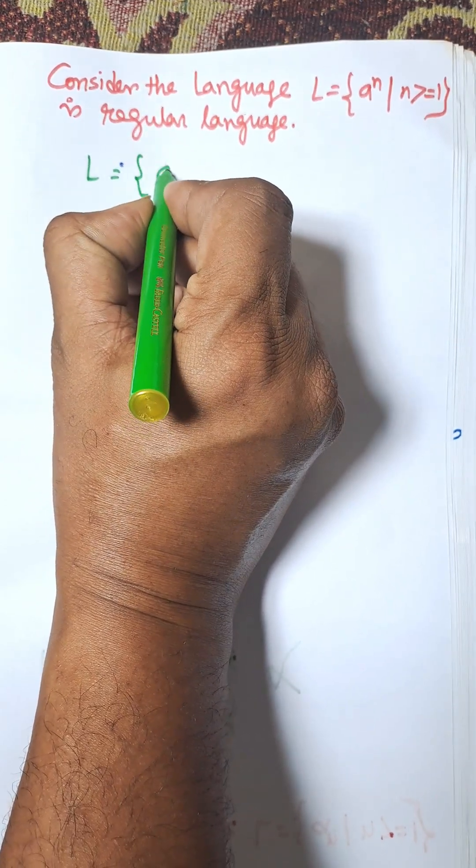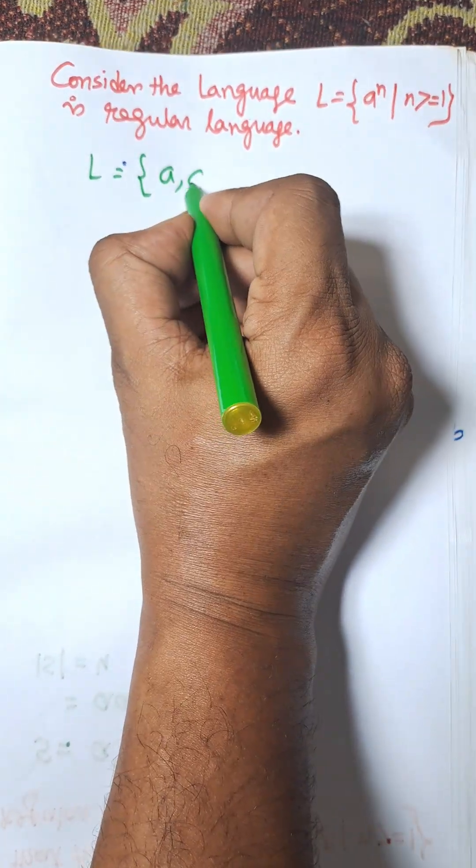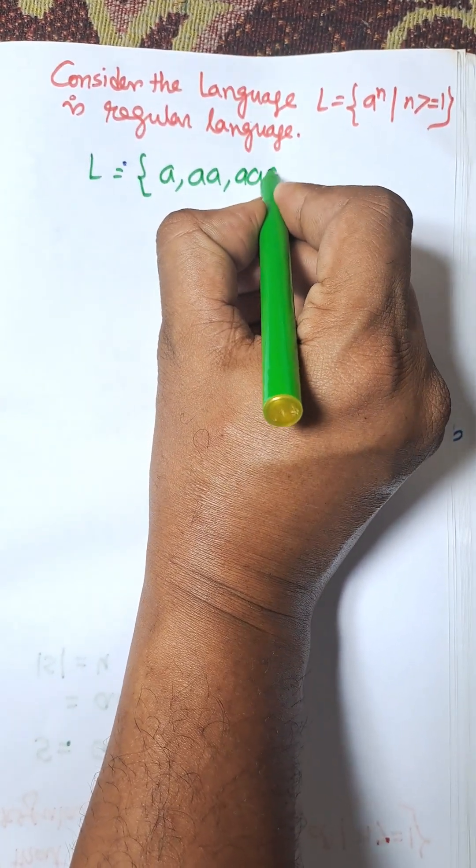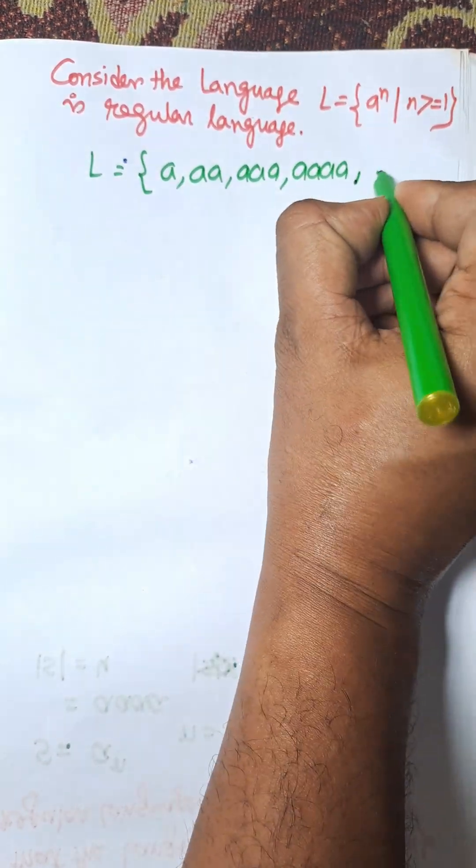Here, L = {a^n | n≥1}, it can be when n=1: a, double a, triple a, and so on.